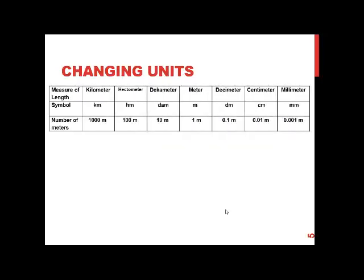To change from one unit to another within the same measurement type, I suggest creating a table with seven columns: kilo, hecto, deca, meter (or the root unit), deci, centi, milli. A kilometer (km) is a thousand meters, a hectometer (hm) is a hundred meters, a decameter is ten meters, and so on.